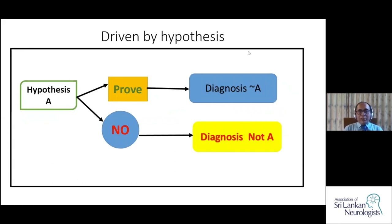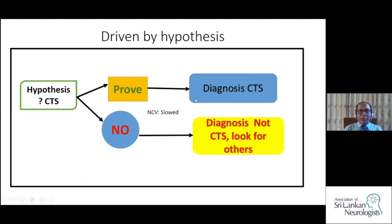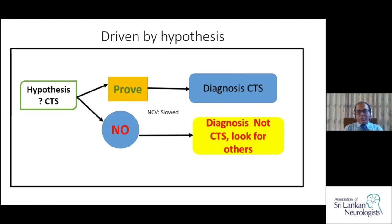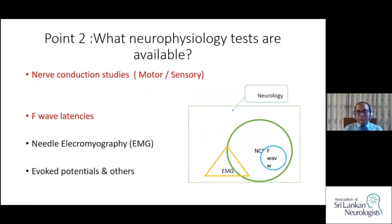For example, for a patient with carpal tunnel syndrome, if nerve conduction is normal, then the diagnosis is carpal tunnel syndrome if median distal latency is delayed. Nerve conduction studies is a part of neurophysiology, which is a very large field, and neurophysiology is a branch of neurology. We are talking about a smaller area, but it's a very important area especially for day-to-day practice.